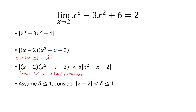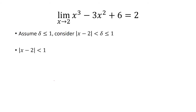Let's assume that delta is less than or equal to 1. So we're considering the absolute value of x minus 2 to be less than delta and less than or equal to 1 — the idea is delta has to be something small. This means x minus 2 is between negative 1 and 1, and adding 2 to all three sides, x is between 1 and 3. So 3 is an upper bound and 1 is a lower bound.